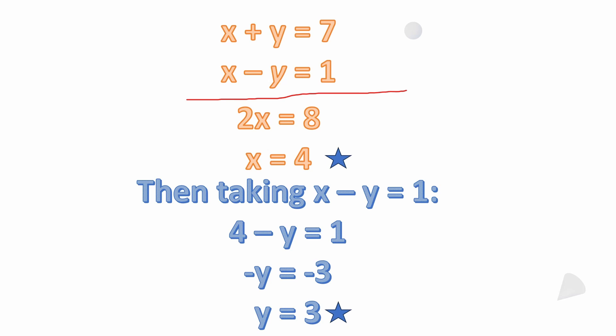Now if we look at the second equation and substitute x with the constant four, we have four minus y equals one. We can subtract four from both sides of the equation, which leaves us with minus y equals minus three. Then if we multiply both sides by minus one, we get y equals three. So x is four and y equals three.